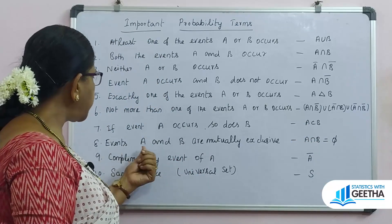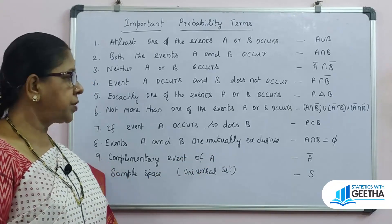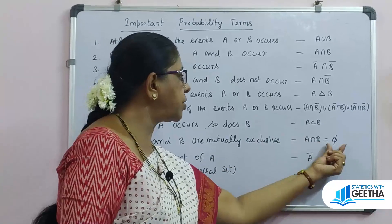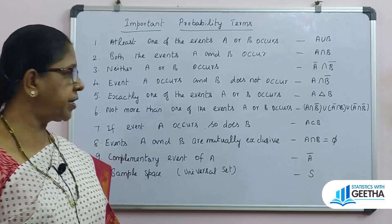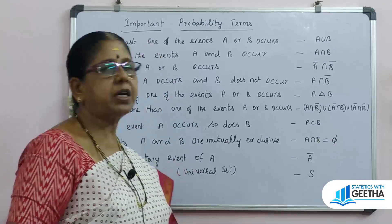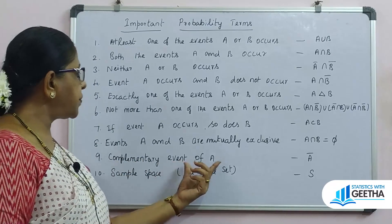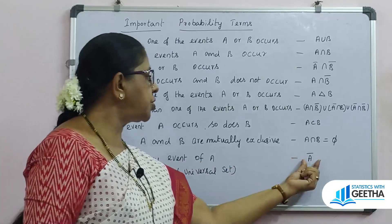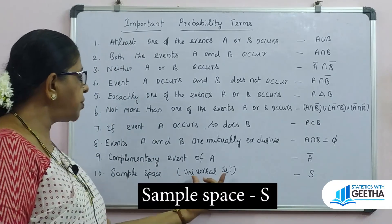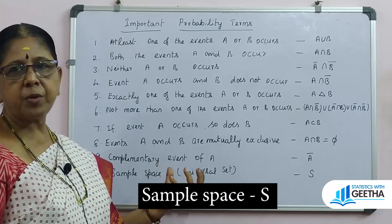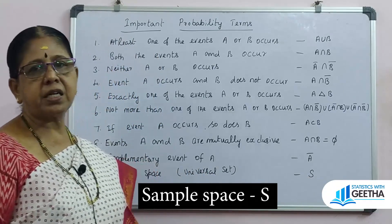Events A and B are mutually exclusive means A intersection B equals the empty set — mutually exclusive events have no common point. The complementary event of A is denoted by A complement. The sample space, denoted by capital S, is the universal set representing the totality of all possible outcomes.